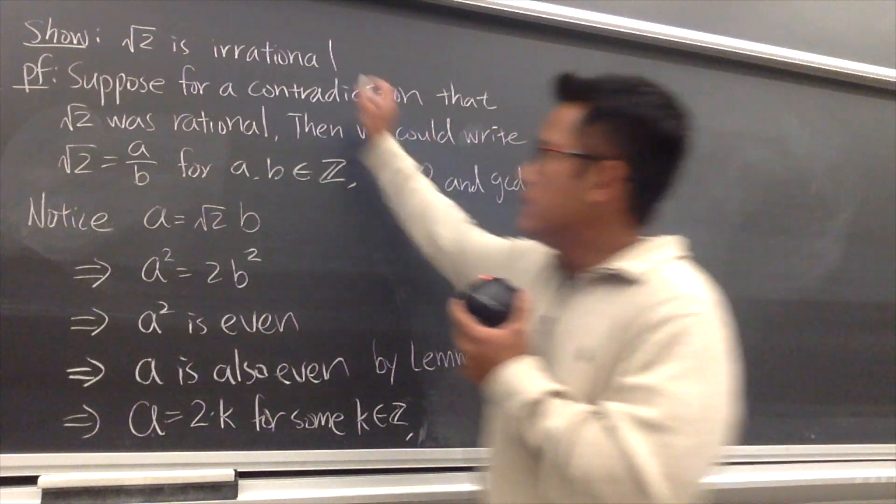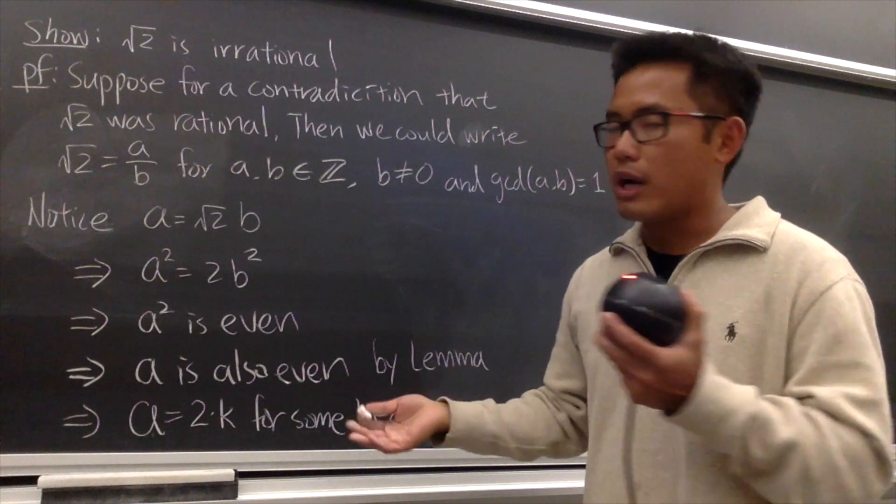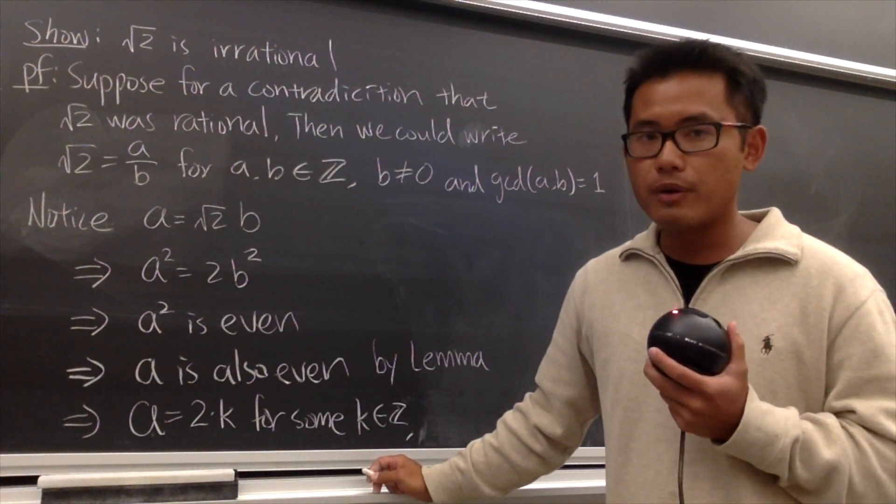OK, so now, this is the statement. You may just think that we all know square root of 2 is irrational, but we are going to come with a mathematical proof.